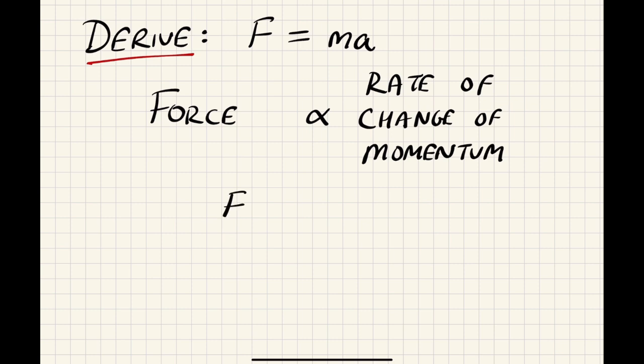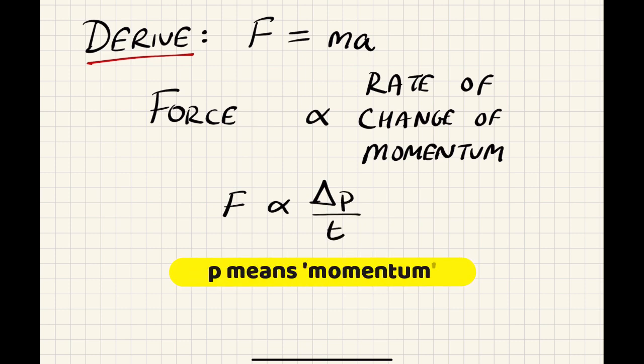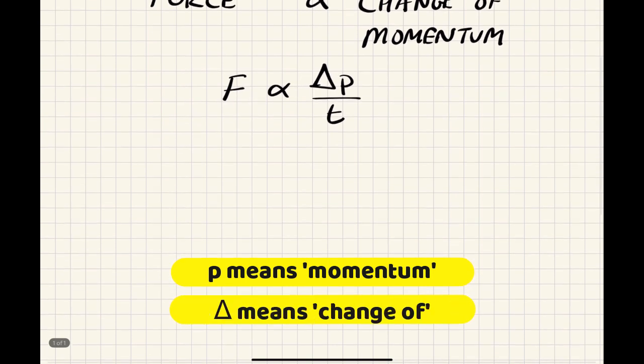We're going to say F for force is proportional to delta P over T. P here standing for momentum. So that delta there stands for change of momentum, that little triangle.